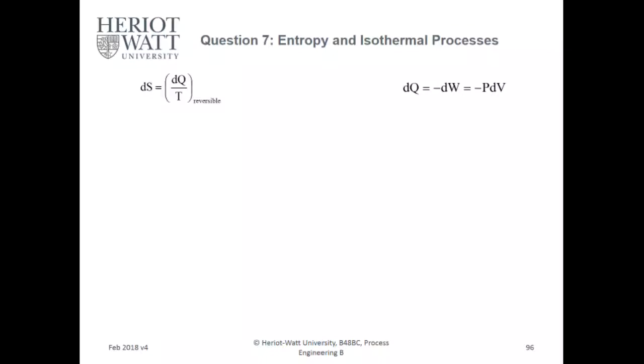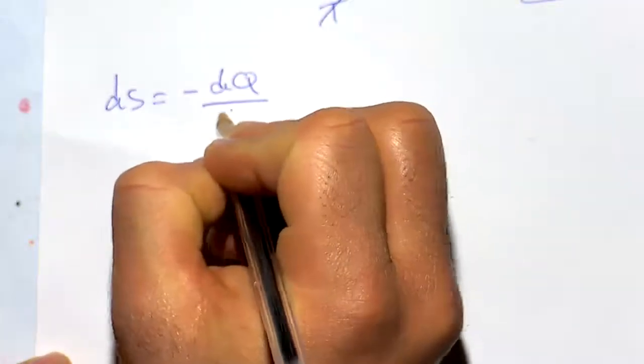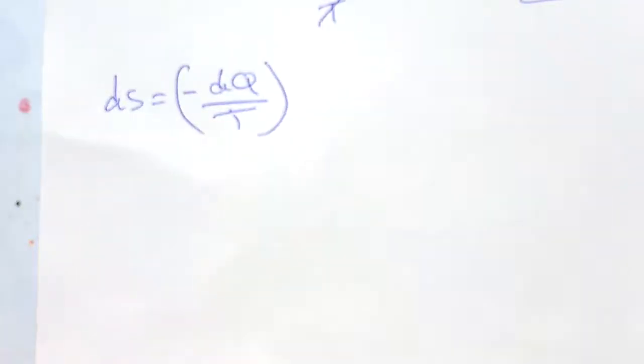So that ds equals dQ over T reversible, I think should be ds equals negative dQ over T. And the reasoning is, it's isothermal. So when you're compressing, it's producing heat. But it's isothermal, so it needs to lose the heat to the atmosphere.